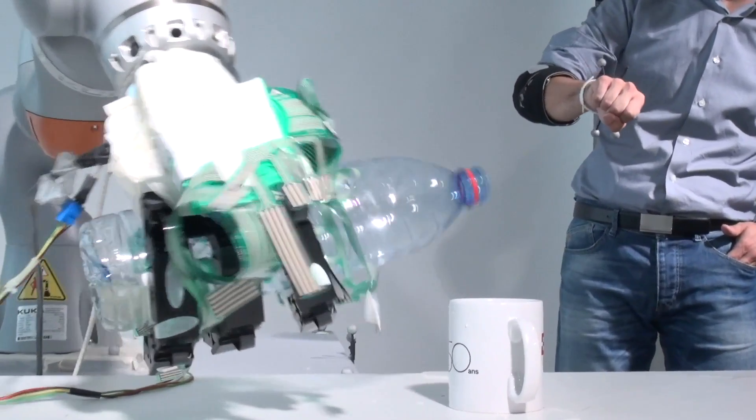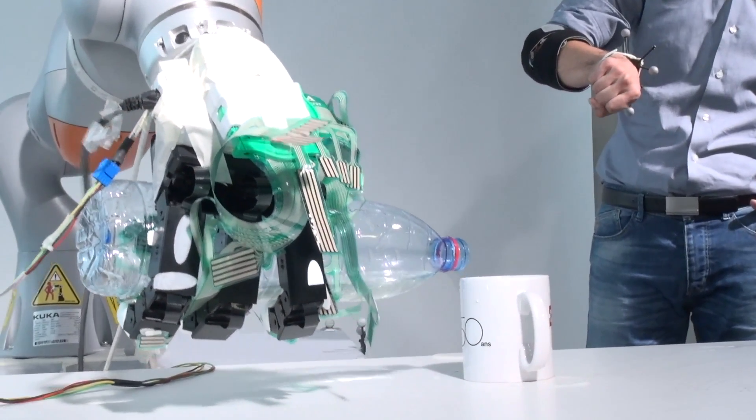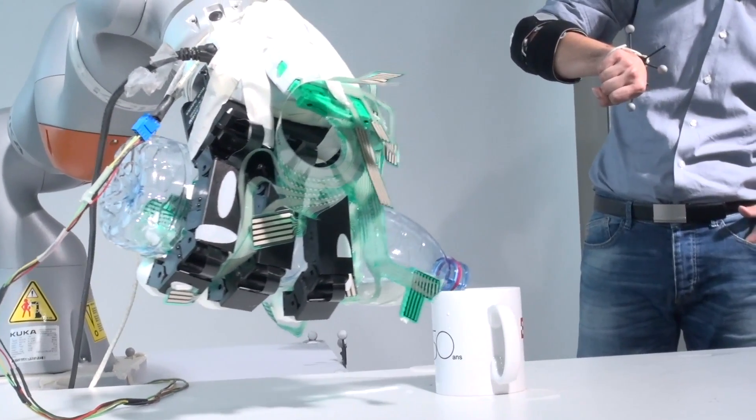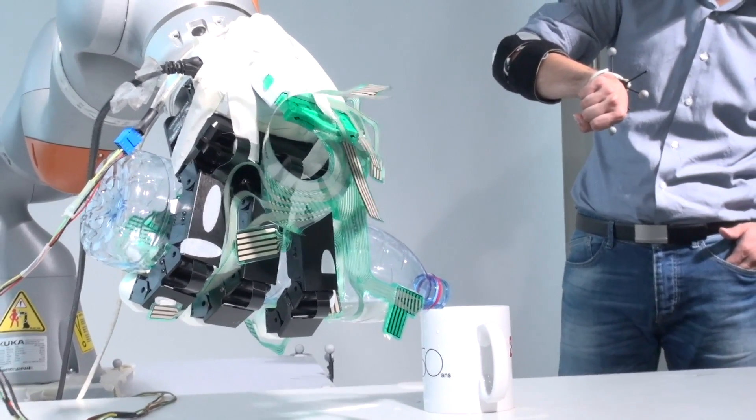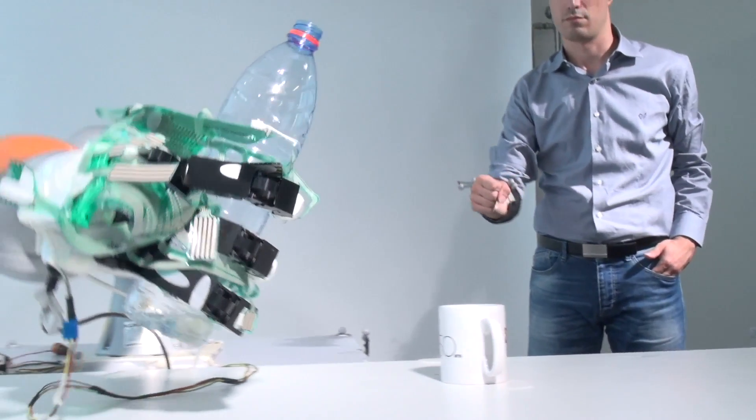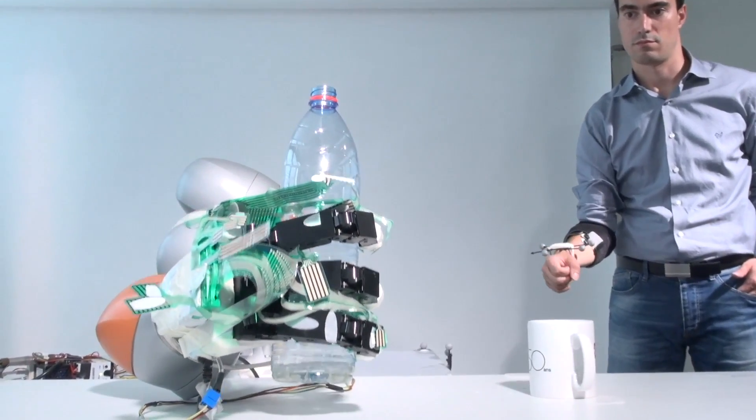What we're doing is we're developing a very smart prosthetic hand that allows an amputee to control each finger individually and also benefit from the aid of robotic assistance to grasp easier.